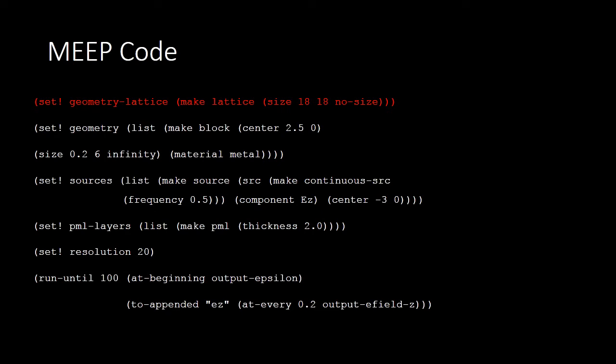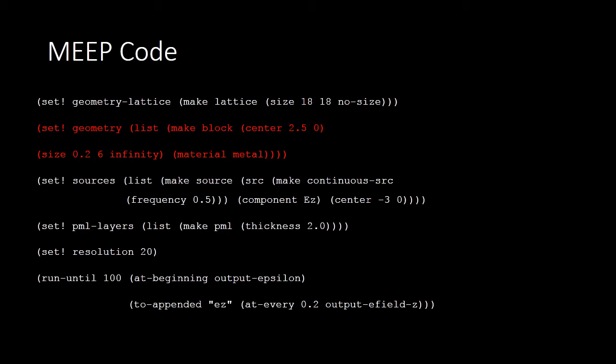Here is the MEEP code that we use to run our simulations. First, we set the geometry of our space. We define an 18 by 18 grid. Since we are considering only a 2-dimensional space, our z-dimension has no size. Then we place our obstacle block in this space, centered at 2.5, 0. We define the size and the material of the object for our simulation.